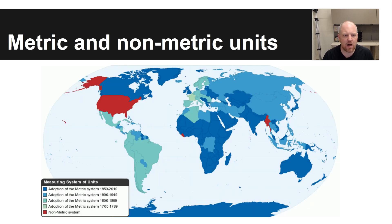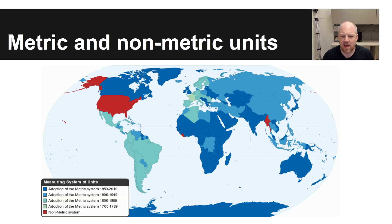So where are metric units used in the world? The answer is most of the world. All the countries outside those listed in red use primarily metric units. The benefit to metric units is they are very easy to convert between — the rest of the world uses them, and all it involves is moving a decimal place.